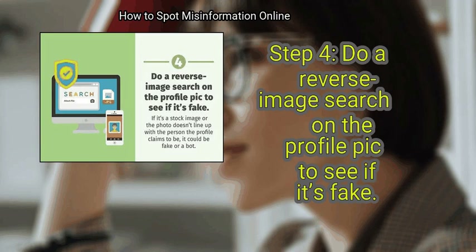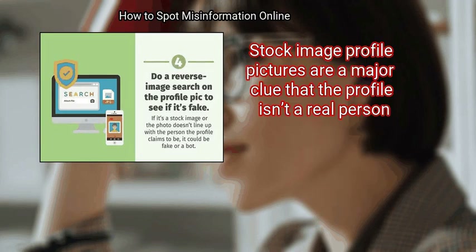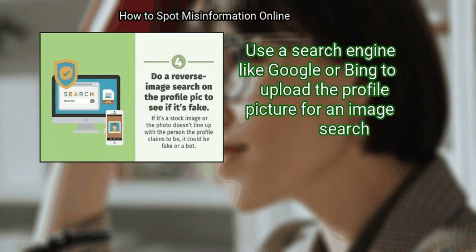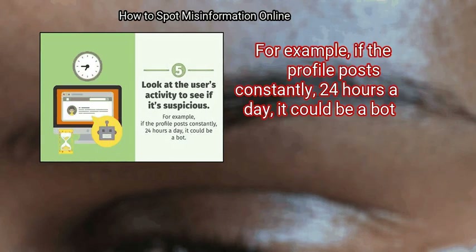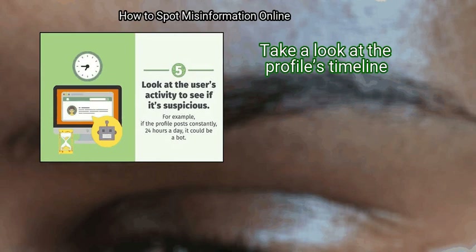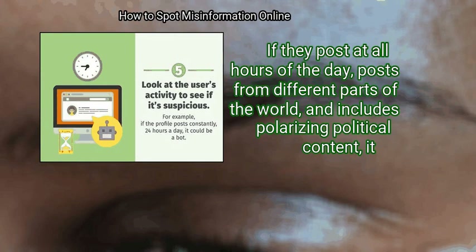Step 4: Do a reverse image search on the profile pic to see if it's fake. Stock image profile pictures are a major clue that the profile isn't a real person. Use a search engine like Google or Bing to upload the profile picture for an image search. Finally, look at the user's activity to see if it's suspicious. For example, if the profile posts constantly 24 hours a day, it could be a bot. Take a look at the profile's timeline — if they post at all hours of the day, post from different parts of the world, and include polarizing political content, be wary.